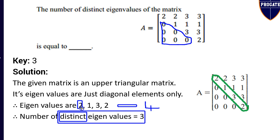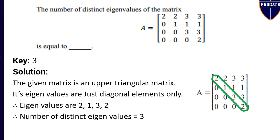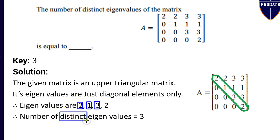To clarify: the eigenvalues are 2, 1, 3, and 2. If asked what are the eigenvalues, the answer is 2, 1, 3, 2. If asked for the number of eigenvalues, the answer is 4. But the question asks for the number of distinct eigenvalues — distinct means different or unique — so the answer is 3, because there are only 3 distinct values: 2, 1, and 3. The fourth eigenvalue is again 2, which is a repetition and does not count as distinct.